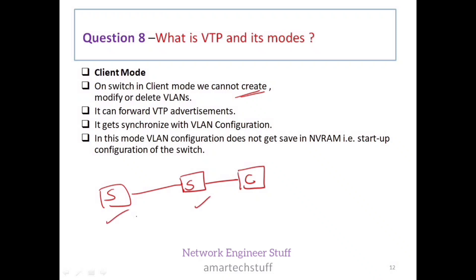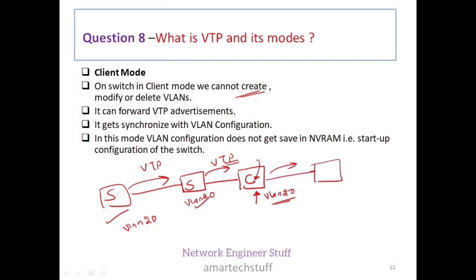When the server creates a VLAN and sends the VTP advertisement to the client mode switch, the client switch gets synchronized with that information. For example, if VLAN 20 is created on the server, VLAN 20 will also be created on the client. The client will also forward the VTP advertisement to other switches — so it gets synced and forwards, just like server mode.